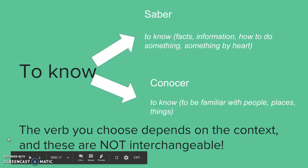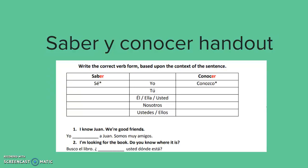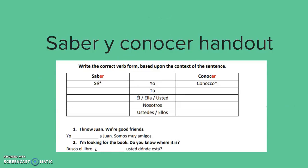We're going to download this handout — there are two parts, a front and a back. On the front, we're going to conjugate the verbs 'saber' and 'conocer' correctly. You'll do your best using the rules, complete the correct conjugated form, and put it in the blank. I will post the answers on Friday.